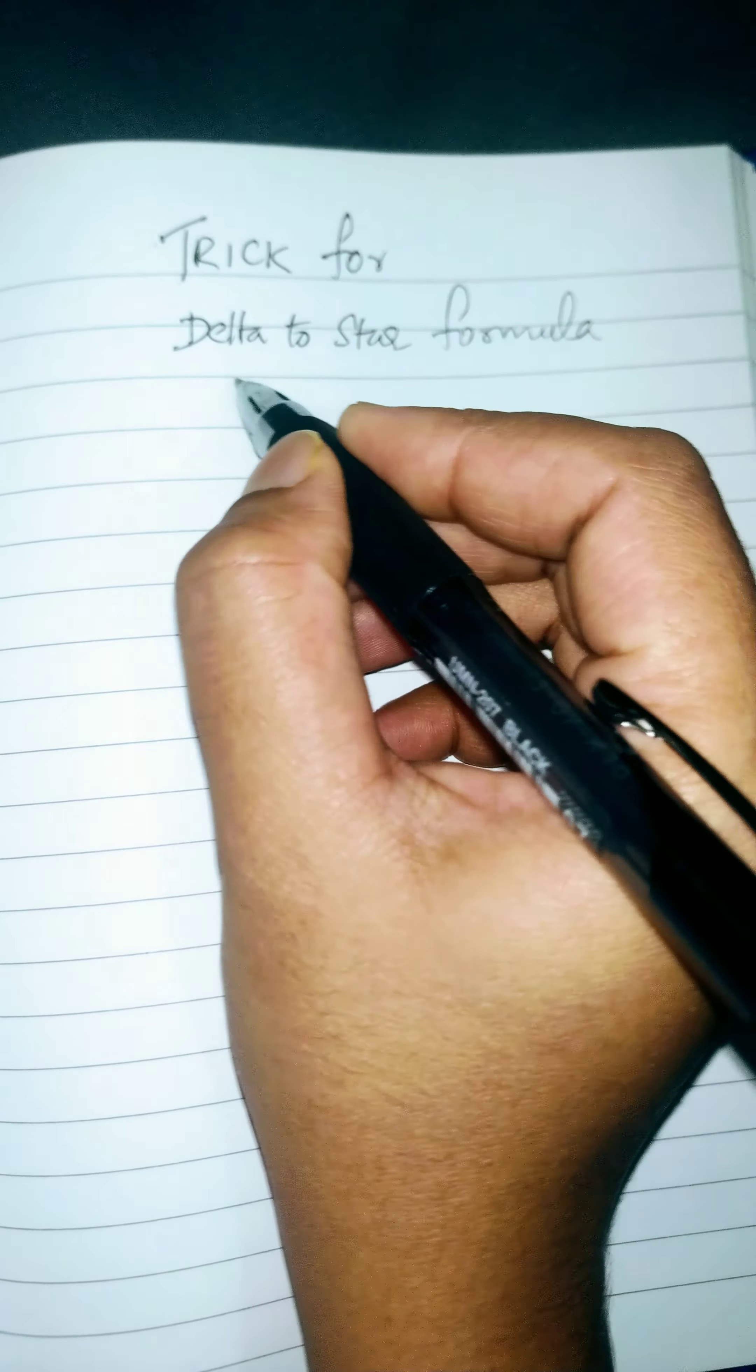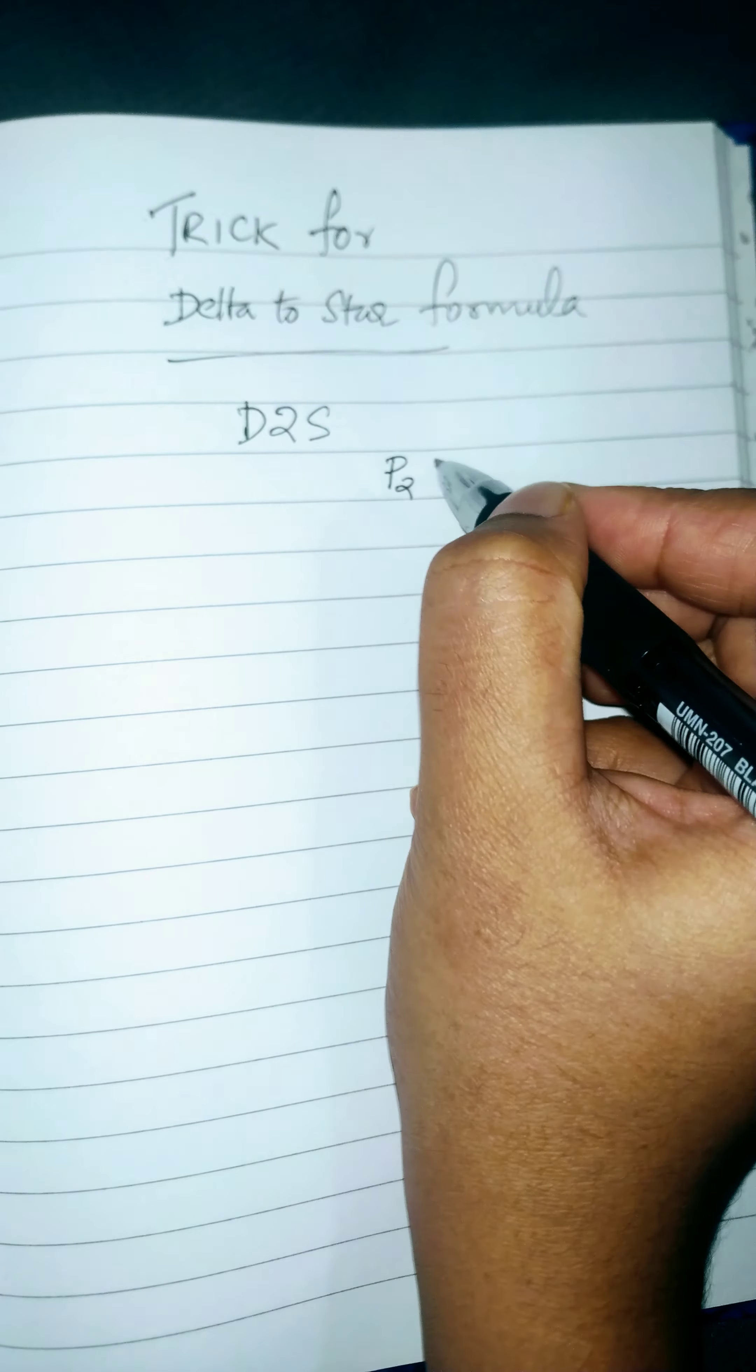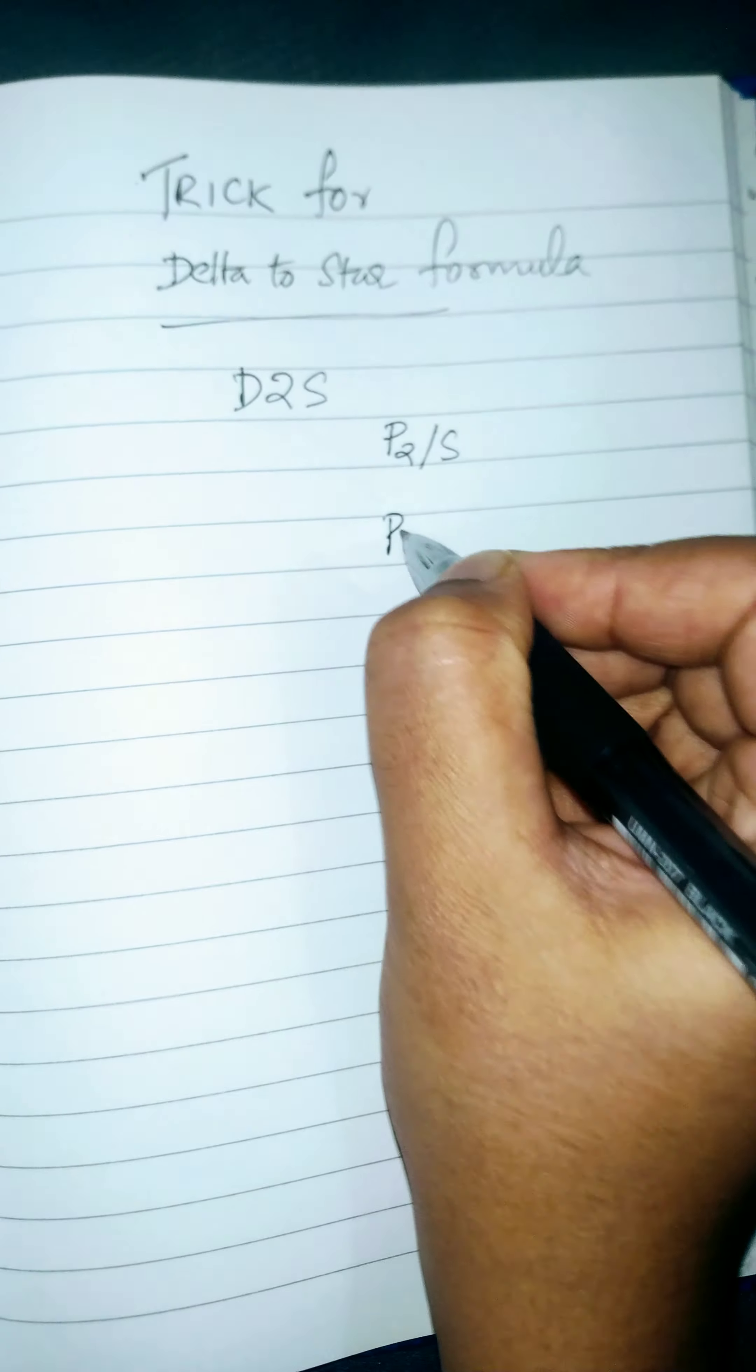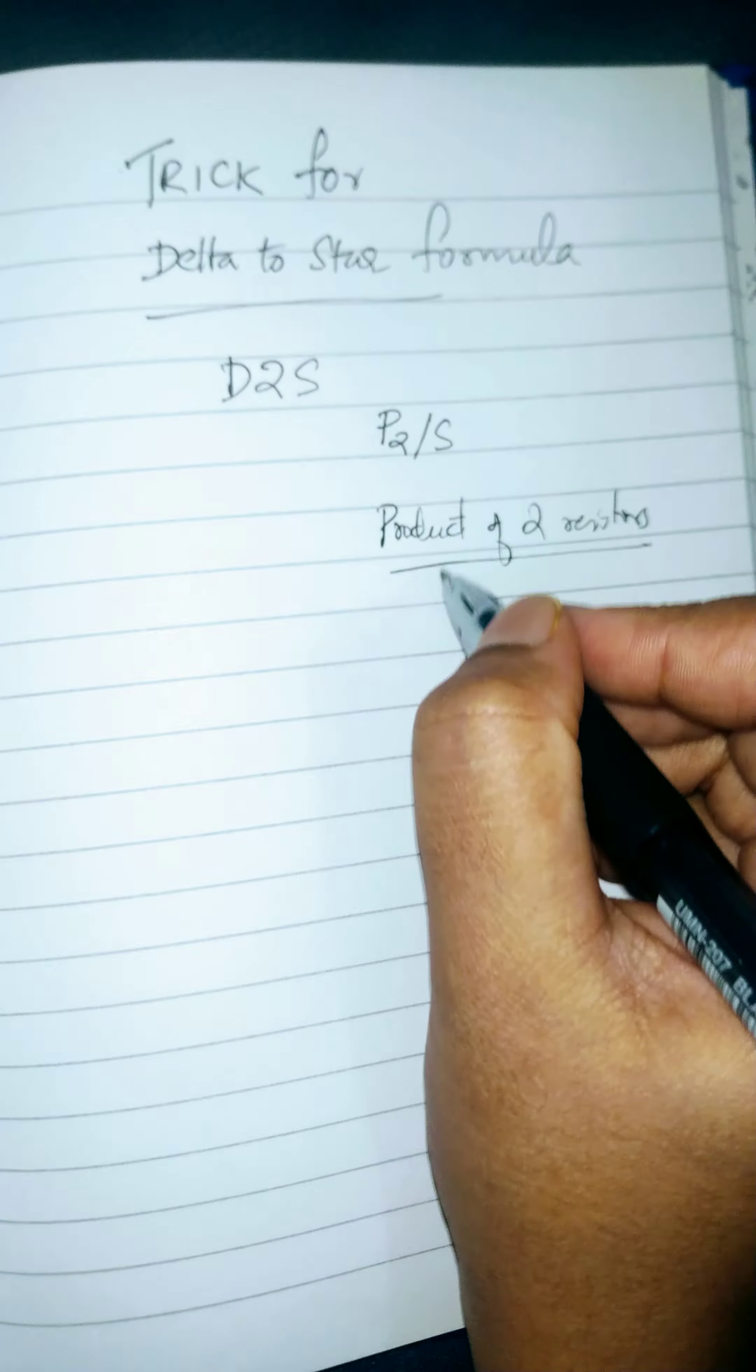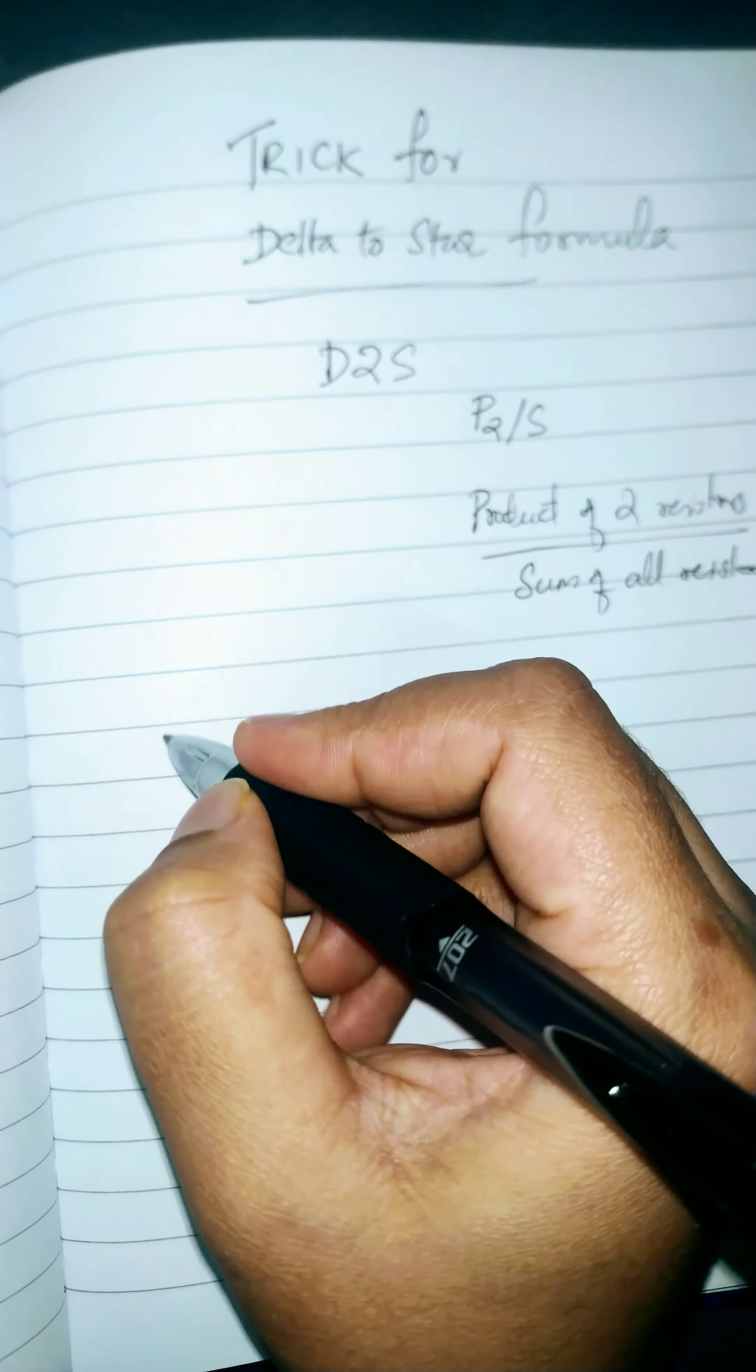Let's see the trick for delta to star formula. The code for the formula is P2 by S. You can relate D2S and P2S. Now what is this P2S? P2S is product of two resistors divided by S, which indicates sum of all resistors.